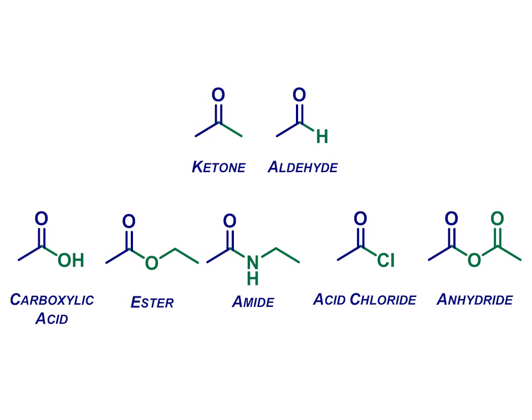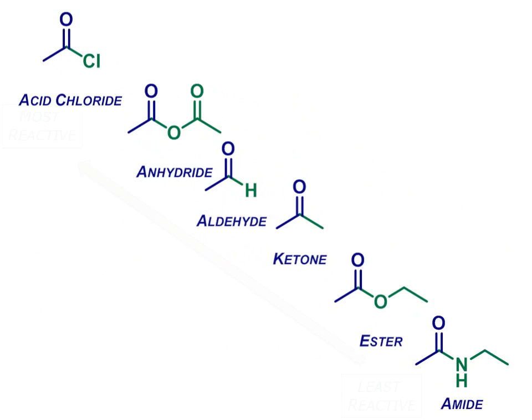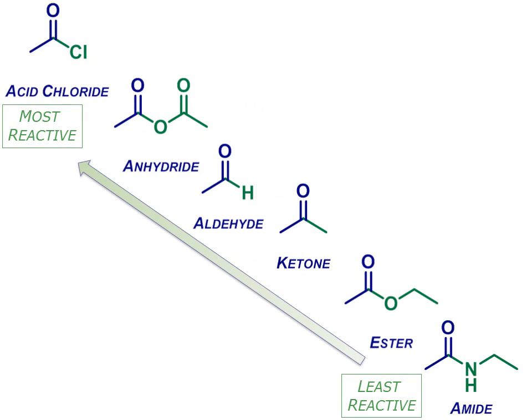Before we close, we should consider the relative reactivity of these systems. We have shown throughout that the carbonyl carbon is electrophilic and therefore reacts with nucleophiles. But which carbonyls are most electrophilic? Well, it turns out that the carbonyl group of acid chlorides and anhydrides are the most electrophilic, because the extra electron withdrawing group attached to the carbonyl carbon pulls even more electron density away from that carbon, making it even more attractive to incoming nucleophiles. Remember how electronegative chlorine is.